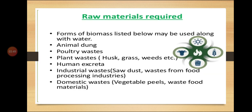The raw materials required for biogas generation include different types of waste: animal dung, poultry waste, plant waste (such as husk, grass, weeds), human excreta, industrial waste (such as sawdust, waste from food processing industries), and domestic waste (such as vegetable peels and waste food materials).